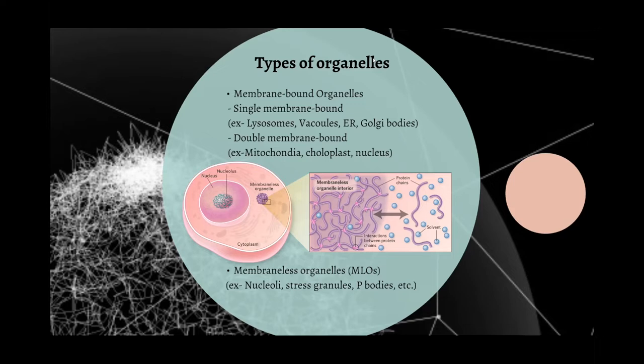Examples of single membrane-bound organelles include lysosomes and endoplasmic reticulum, among others. Double membrane-bound organelles include mitochondria, chloroplasts, and the nucleus. The contents within these membrane-bound organelles are readily regulated and maintained with the help of the lipid and protein membrane surrounding them, giving them very specific and dedicated functions.